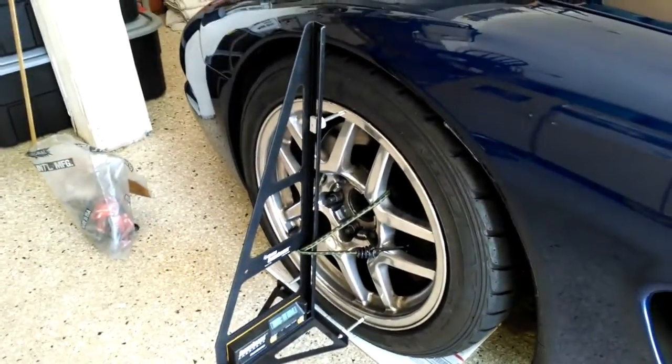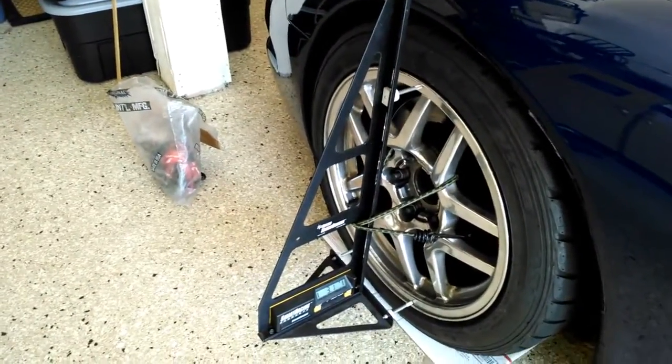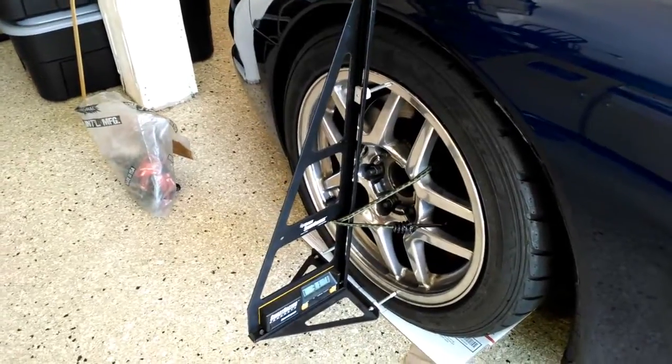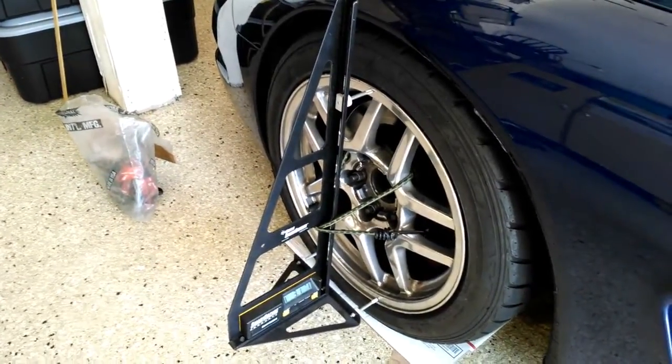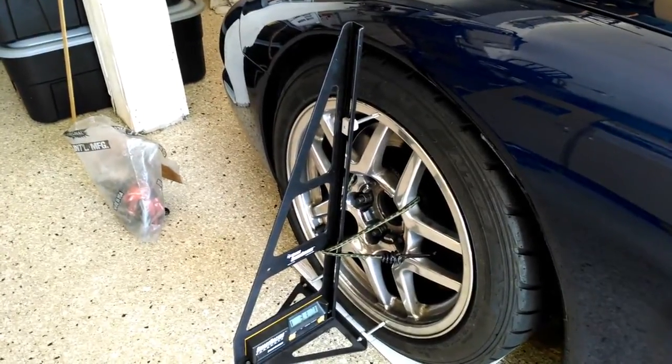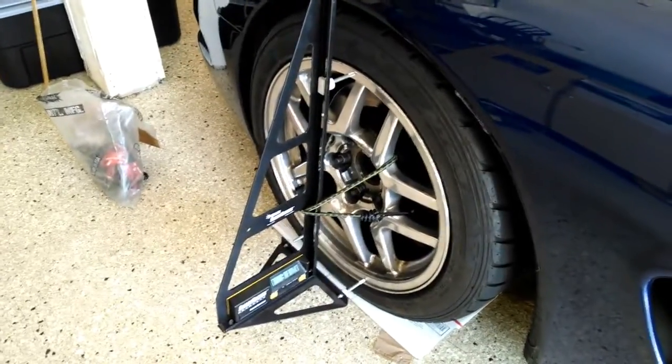I've got my camber gauge on there and I used a bungee this time so it won't fall off like the last video. What you have to do first is take your measurements with turning the front wheels left and right 20 degrees. I went over that in the other video, I won't go over it again. I'm going to take my readings and then I'm going to show you how to place the shims to adjust the caster.